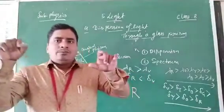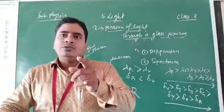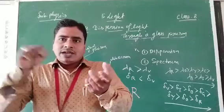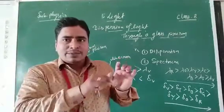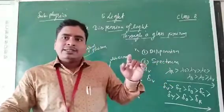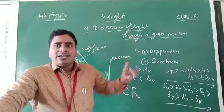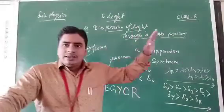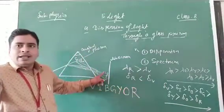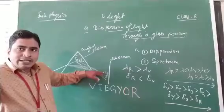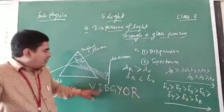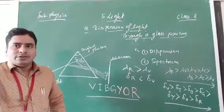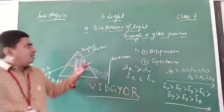You can see this in an activity: take a glass prism — I have already shown you a glass prism in the last class — pass the white light through the rectangular surface of the glass prism, and observe its dispersion on a white screen. You will observe that white light is split into 7 colors in order, where red deviates minimum and violet deviates maximum.